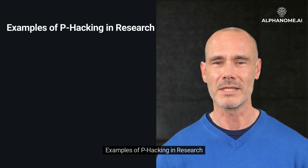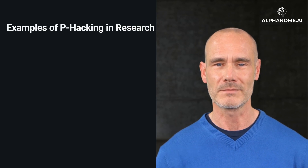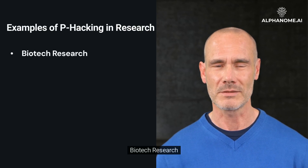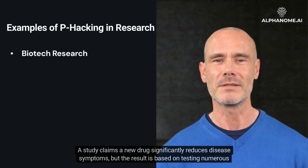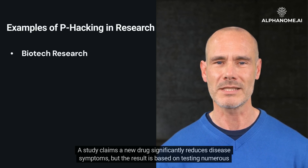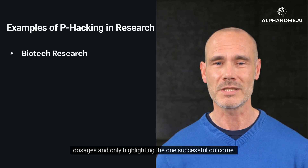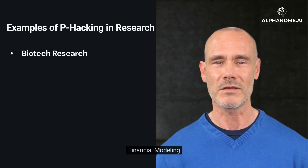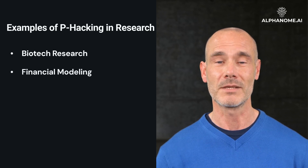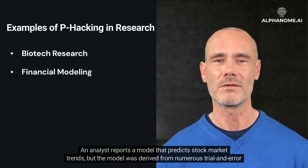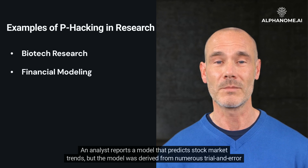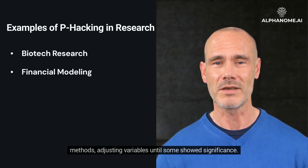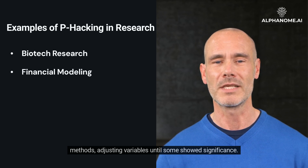Examples of P-Hacking in research. In biotech research, a study may claim a new drug significantly reduces disease symptoms, but the result is based on testing numerous dosages and only highlighting the one successful outcome. In financial modeling, an analyst may report a model that predicts stock market trends, but the model was derived from numerous trial-and-error methods, adjusting variables until some showed significance.